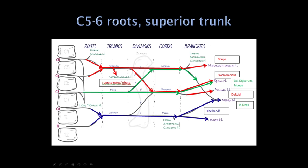Starting with C5/C6 in red: these roots come together to form the superior trunk. The suprascapular nerve supplies infraspinatus and supraspinatus. From the superior trunk there's a straight shot down to the lateral cord, musculocutaneous nerve, to biceps. So a patient with either a C5/C6 radiculopathy or superior trunk plexopathy will have weakness of supraspinatus, infraspinatus, and biceps. There's also a division from the superior trunk going to the posterior cord, off which comes the axillary nerve supplying deltoid, so deltoid will also be weak. From the posterior cord, the radial nerve supplies brachioradialis — also a key muscle for C5/C6 or superior trunk.